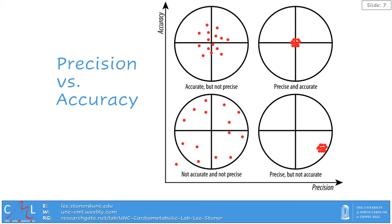Precision means that we are getting the same or similar numbers on repeat assessments. If the device is not precise enough, we're not going to be able to detect the desired change in arterial stiffness over time. Now, a device can be precise but not accurate, as depicted in the diagram, meaning that the device is not actually telling us what we think it is. Accuracy refers to whether the device is actually telling us what we think it is. Optimally, we want a device that is both precise and accurate.